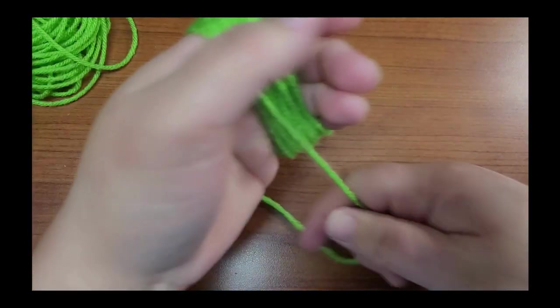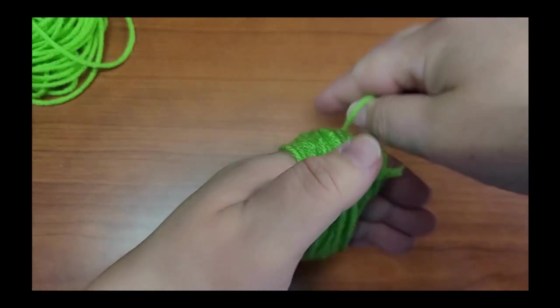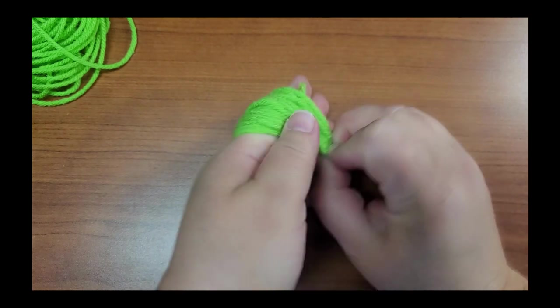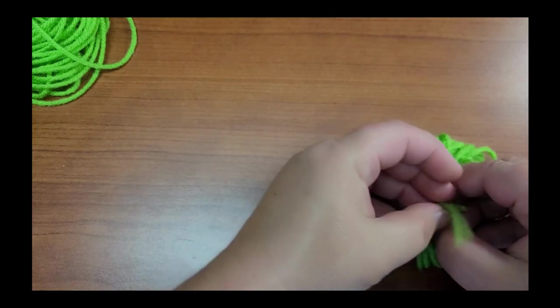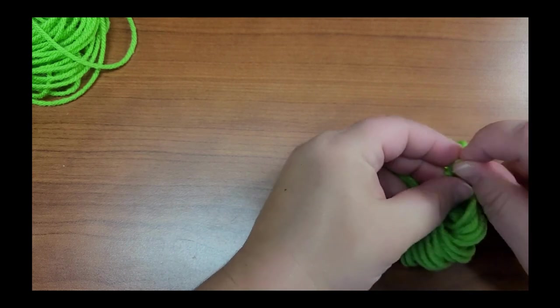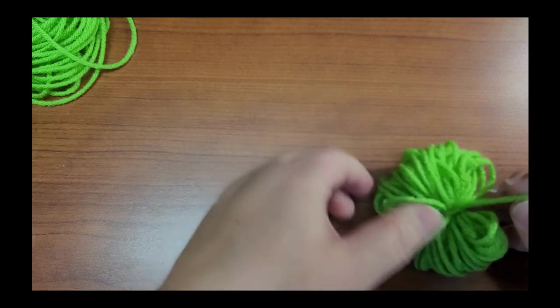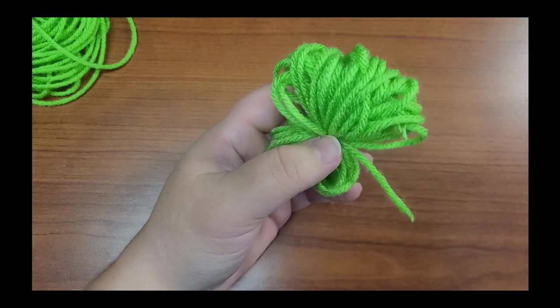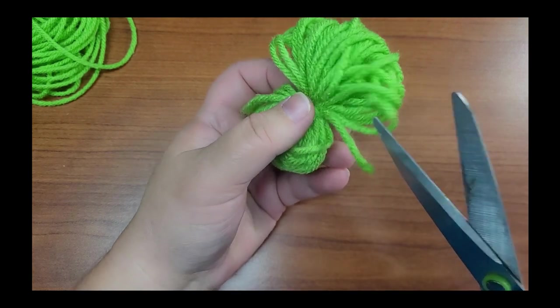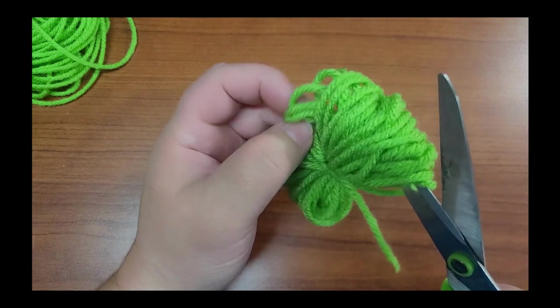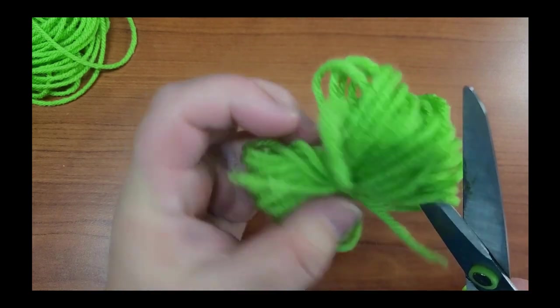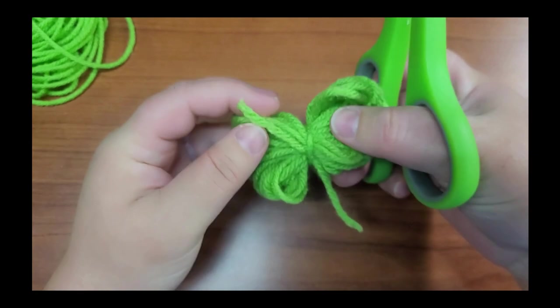And then slide it off your hand. Retie it with the extra piece of yarn that was originally tied around it. And I'm going to try to cut the yarn to make a pom-pom without cutting that middle string, which I think is how I messed it up last time. But there's really no telling.